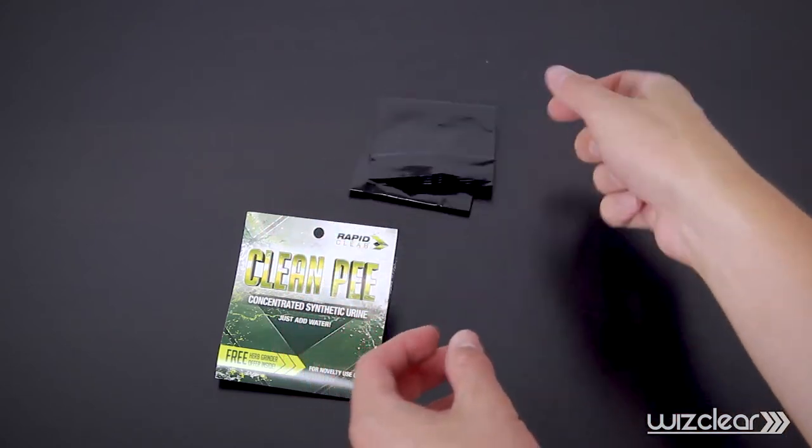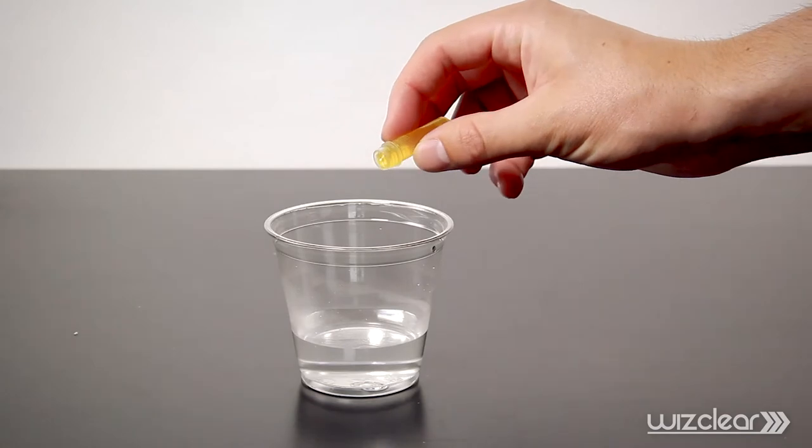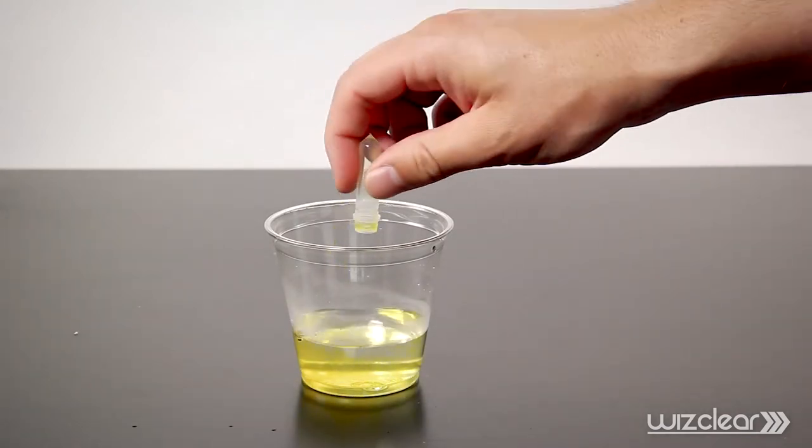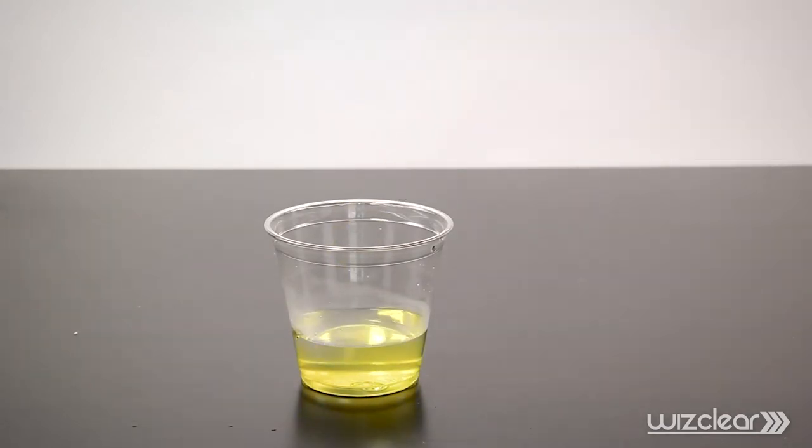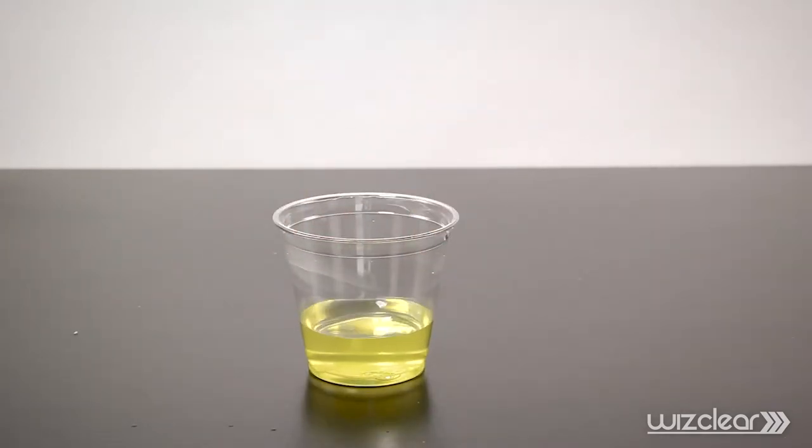Take the concentrated urine out of its protective bag. CleanPee is light-sensitive and should remain in the bag until ready to mix. Mix the concentrated urine with the warm water and swirl the sample around, making sure the concentrated urine is fully mixed. After mixing, the concentrated urine should be used within 24 hours. Those needing a reheatable urine should use QuickFix synthetic urine, also available on detoxforless.com.